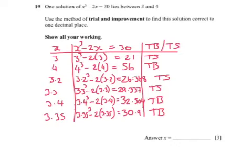Question 19. We are asked to use the trial and improvement method to find the solution to the equation x² - 2x = 30, where we are given that it lies between 3 and 4. Even though we are given that it is between 3 and 4, we must first try 3 into the equation.